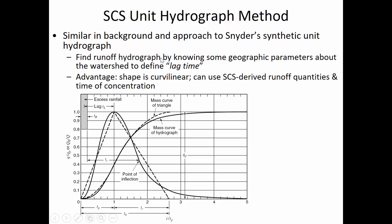What this unit hydrograph method does is it improves on the Snyder approach because the Snyder approach was triangular, which is really kind of an unrealistic depiction of the rising limb and how the flow rate dissipates more slowly after a storm. This is an improvement on a way to calculate what's known as the lag time. This bar represents a rainfall hydrograph — specifically excess rainfall, the time after the initial abstraction is already satisfied. If we measure from the middle of that period of rainfall to where we see the peak, that's known as the lag time.